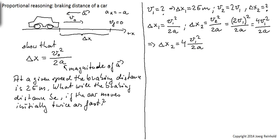Now, if you look carefully at this, what you see is that I have here V1 squared over 2a, which is just delta x1. So, what I get is, I get 4 delta x1. So, the answer is 4 times 25 meters, which is 100 meters.